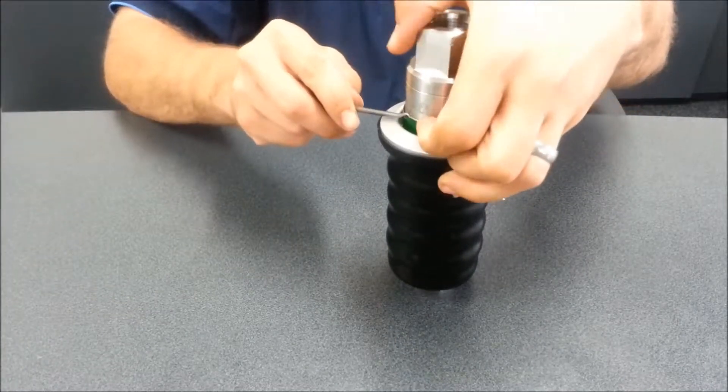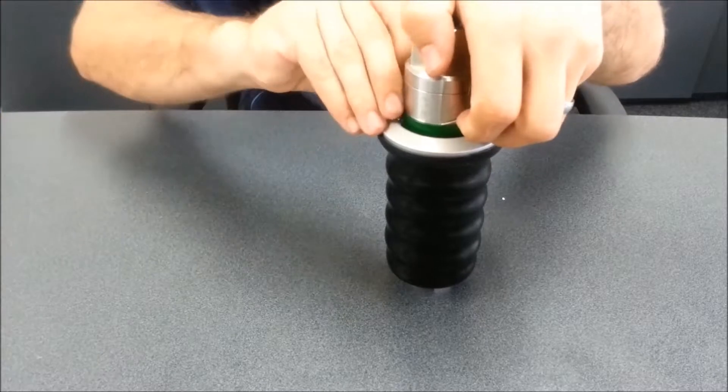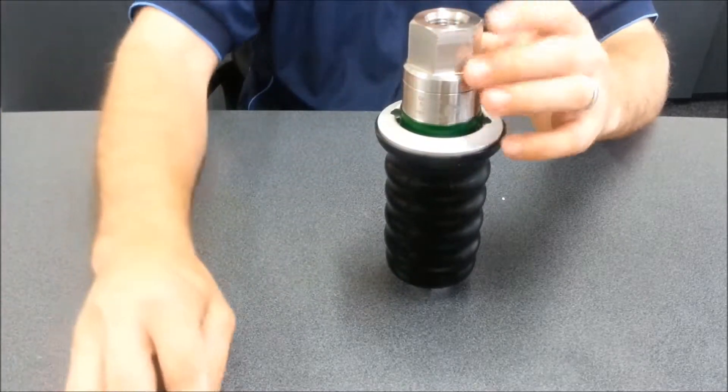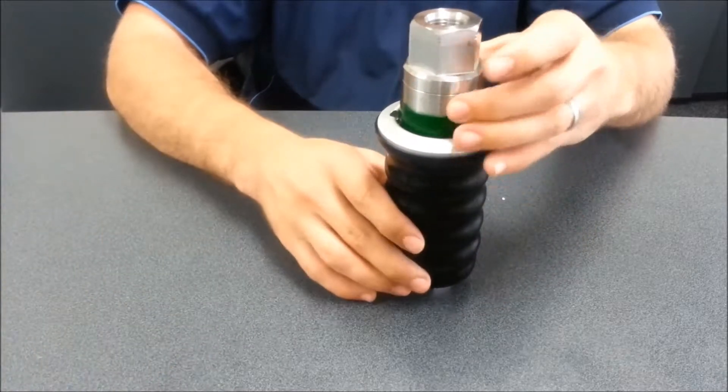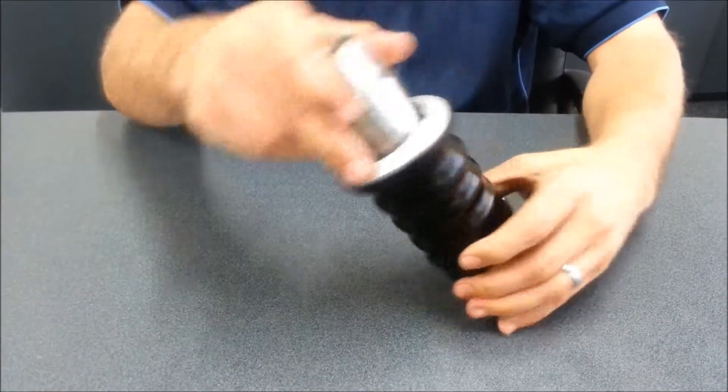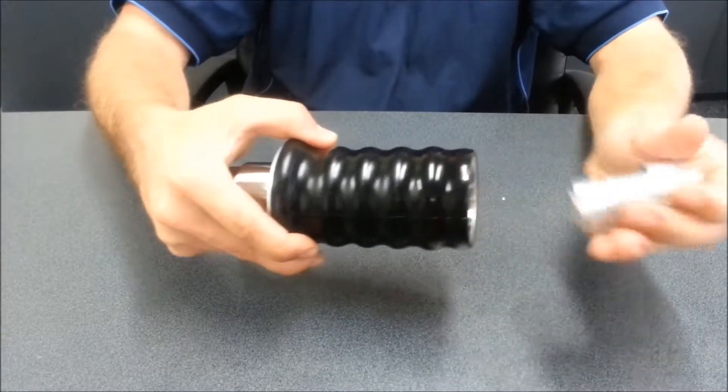On the back of the nozzle, remove the first retaining clip. Then remove the green sleeve and uncouple the nozzle.